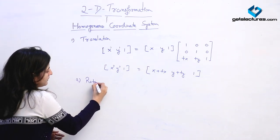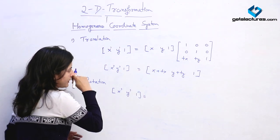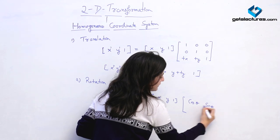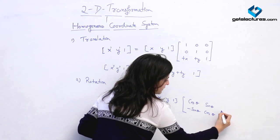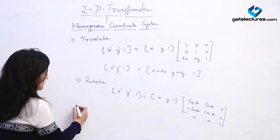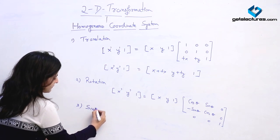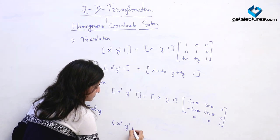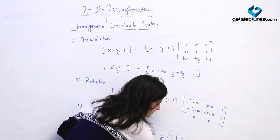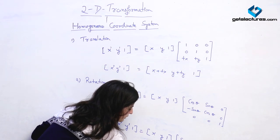Same for rotation: we represent the rotation equation as [x', y', 1] equals [x, y, 1] multiplied by the rotational matrix [cosθ, sinθ, 0], [−sinθ, cosθ, 0], [0, 0, 1]. By solving this we get the standard rotation result. In scaling also, [x', y', 1] equals [x, y, 1] multiplied by [sx, 0, 0], [0, sy, 0], [0, 0, 1], and solving this gives x·sx, y·sy, and 1.